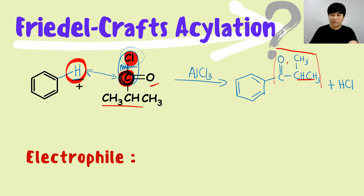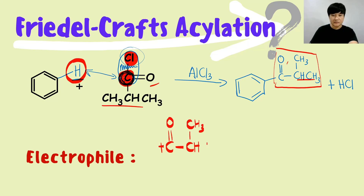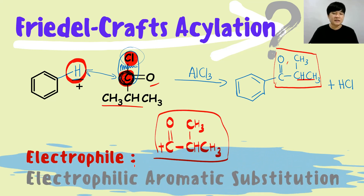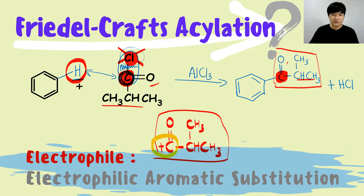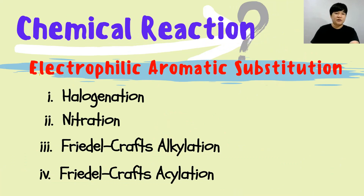The electrophile in acylation is the group of atoms that substitutes the hydrogen — the acylium ion [C=O]⁺ with the attached alkyl chain. The carbon bonded to the benzene ring carries the positive charge. This is the last electrophilic aromatic substitution type. Focus only on the carbon holding the Cl — when Cl is removed, that carbon substitutes the hydrogen and must carry a positive charge as the electrophile.